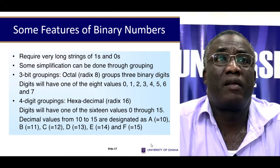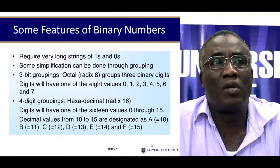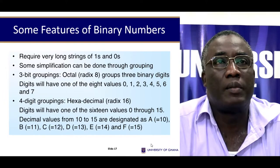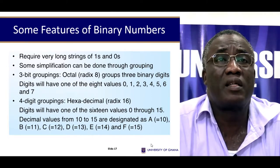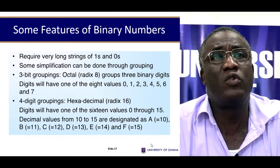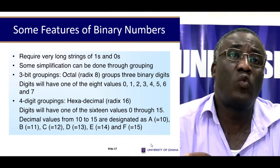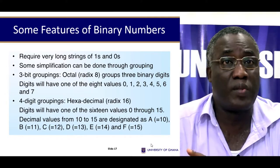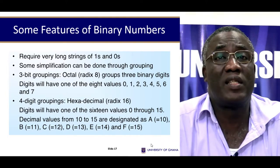A few things to realize about binary numbers: you normally require very long strings of 1s and 0s, which can be difficult. Unlike decimal where you need only a few positions to represent a huge number, in binary the strings can be very long. Recalling all those 1s and 0s can be quite confusing, so you may need to do some simplification by grouping them. There are two ways proposed: octal, using 3 bits to group, or hexadecimal, using 4 bits to group — the latter is quite popular because it simplifies a lot of things.